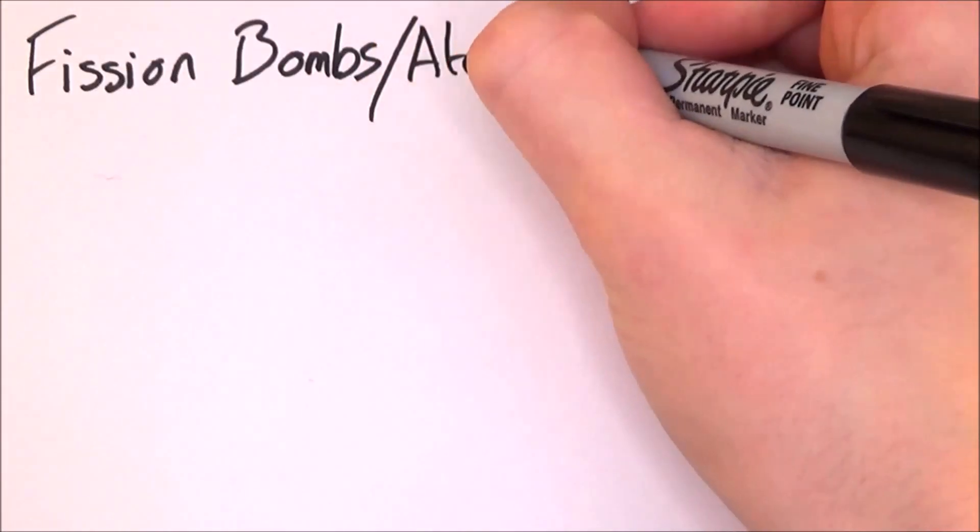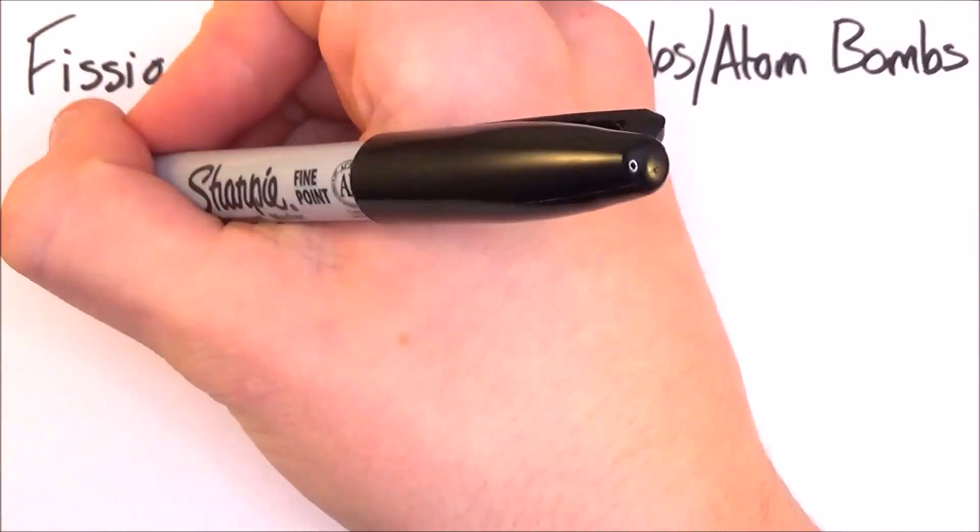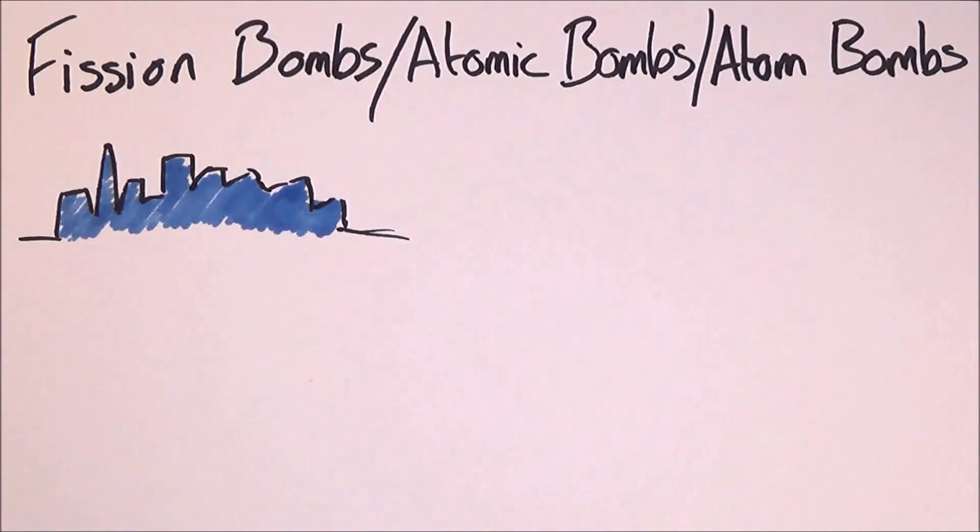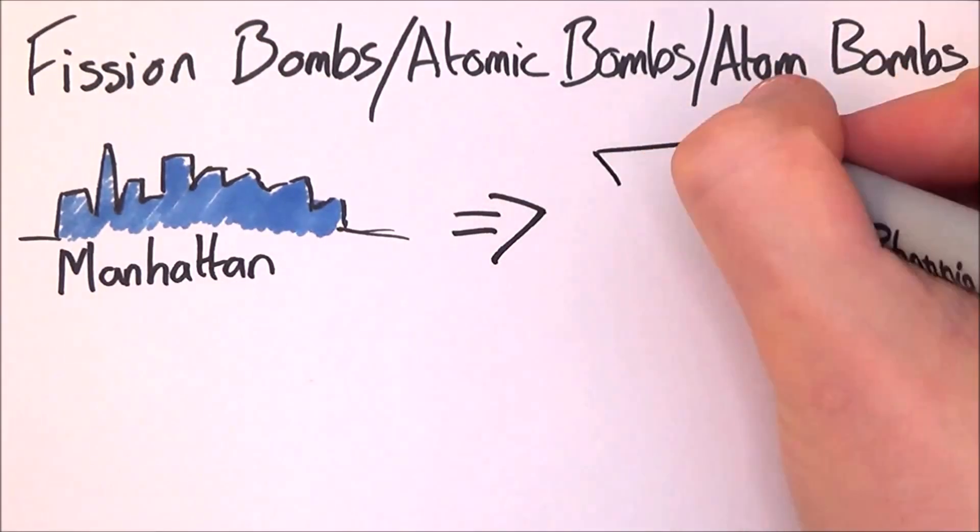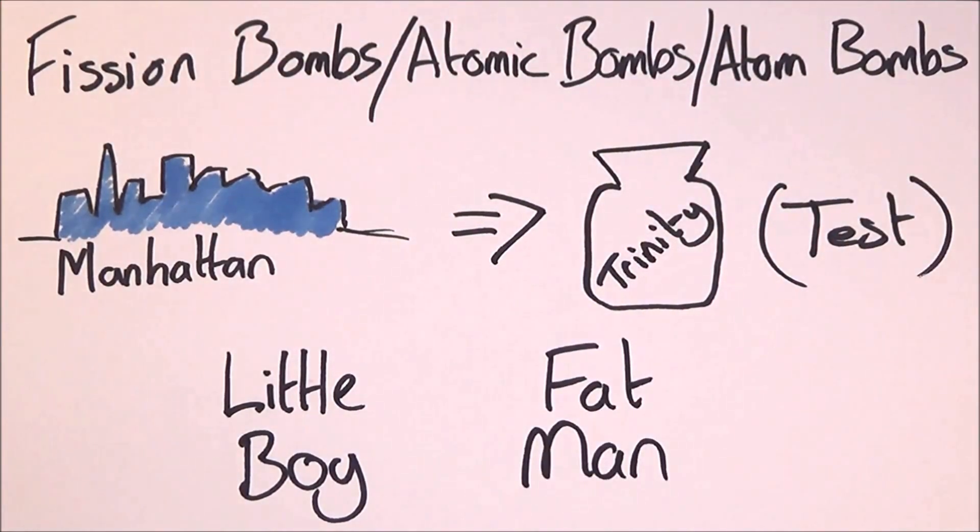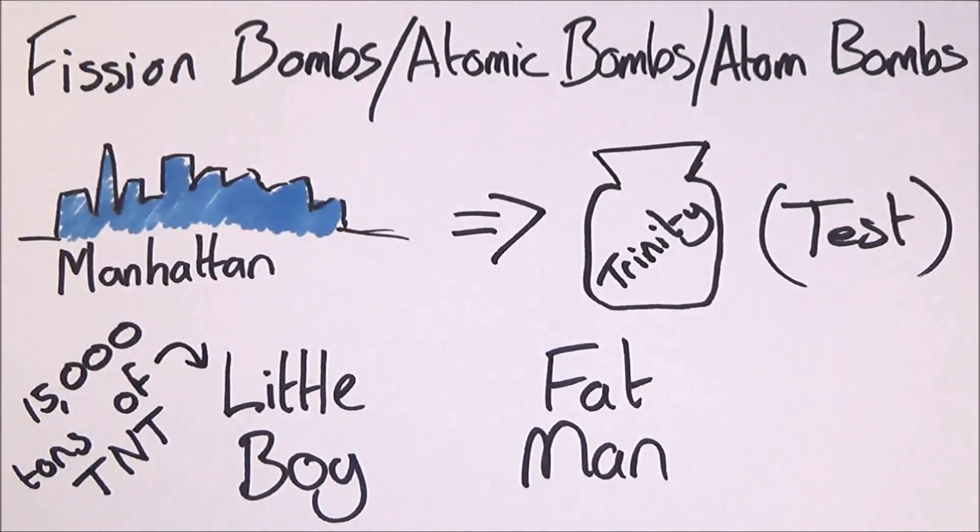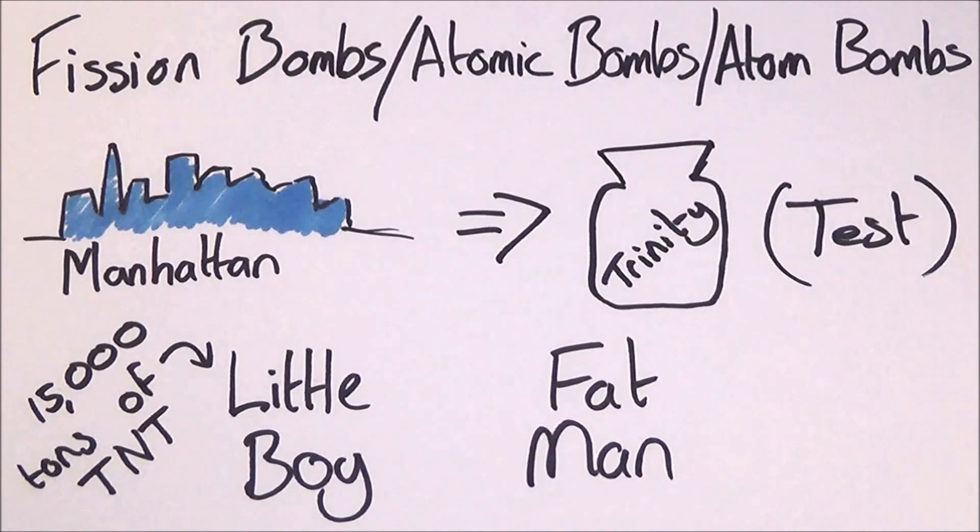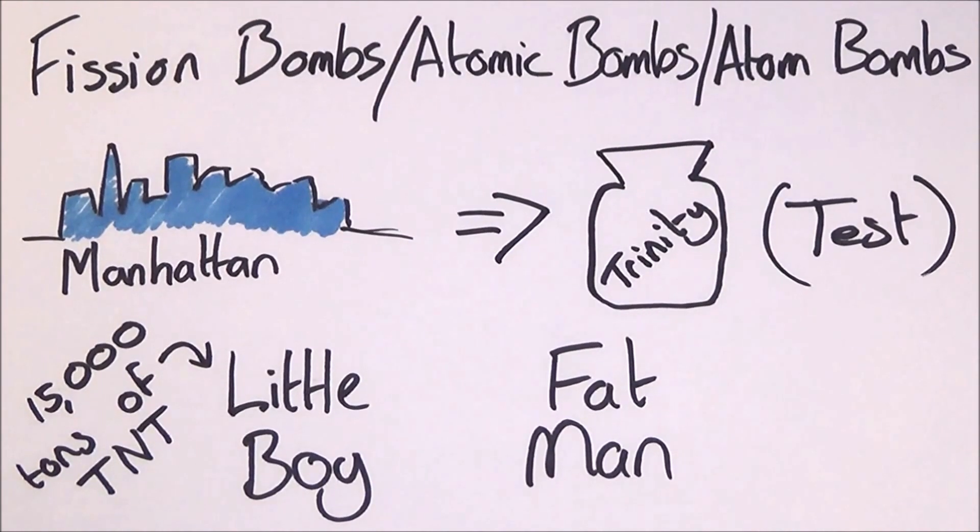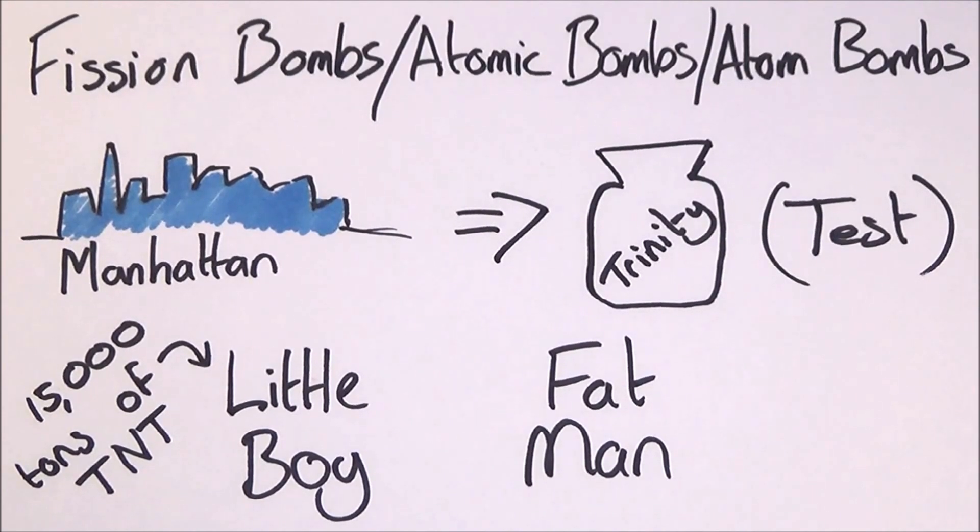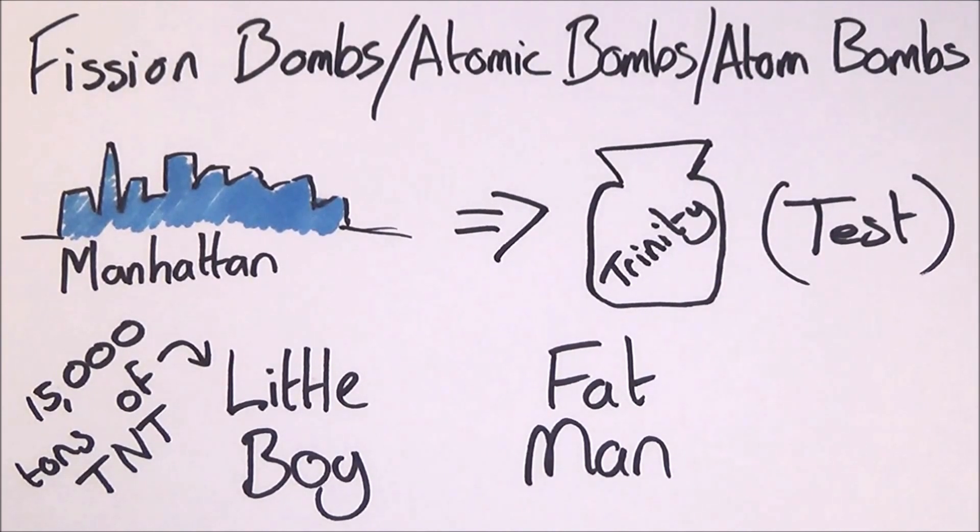Now this process is also used for fission bombs, otherwise known as atomic bombs or atom bombs. Nuclear weapons were the main motivation to research into nuclear fission. The Manhattan Project were the research and construction of Trinity, the first test bomb. Little Boy and Fat Man, which were the bombs dropped on Hiroshima and Nagasaki. Little Boy had enough power in it to destroy a large part of the city. It was equivalent to about 15,000 tons of TNT. But nowadays they are over 10 times more powerful and 8 times lighter.